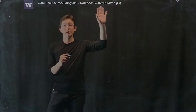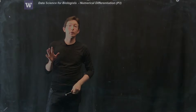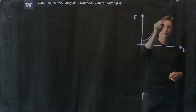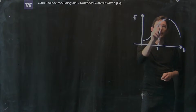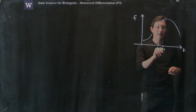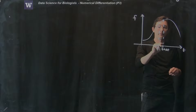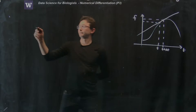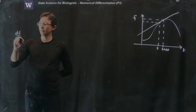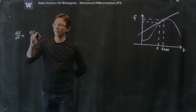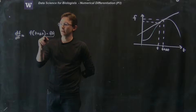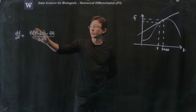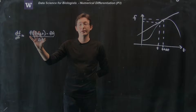In the last two parts of our sequence on numerical differentiation, we first derived a formula for the finite difference. If we have some function f of time, we could approximate the derivative at some point t by taking the slope of the line between t and t plus delta t. So the approximate slope of the tangent line is: df/dt is approximately equal to f(t + Δt) minus f(t), divided by Δt. This is the forward difference scheme, and we showed that for a function sine of t, this is a pretty good approximation of the derivative as long as delta t is small.